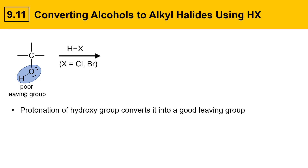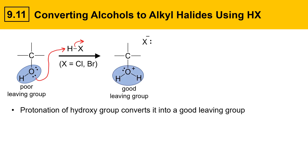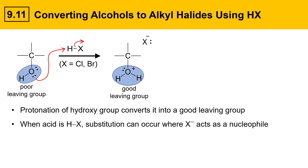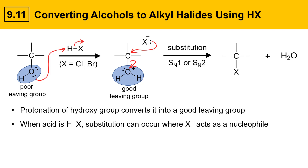If the acid is HX, where X is chlorine or bromine, the acid can protonate the alcohol and that generates a protonated OH, which is now a good leaving group. When the acid is HX, a substitution reaction can occur where the X⁻ species acts as a nucleophile. So Cl⁻ or Br⁻ would be acting as a nucleophile to displace the leaving group. That results in a substitution reaction, and the mechanism could be either SN1 or SN2. Elimination reactions might compete in this reaction, so that's something to be aware of.